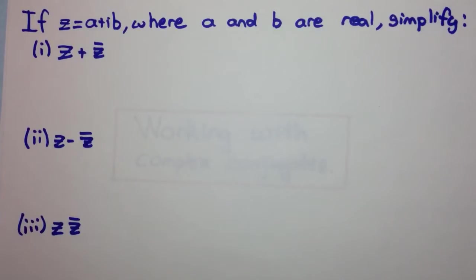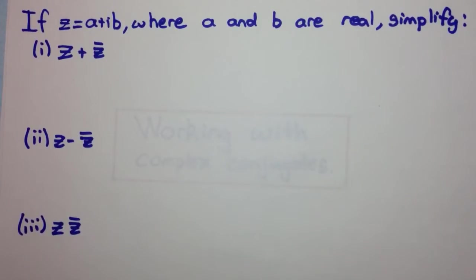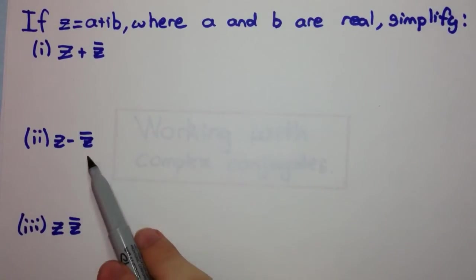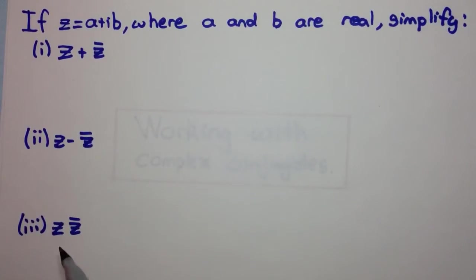This is a theoretical exercise which will be a derivation of some of these properties. If z equals a plus ib, where a and b are real, we need to simplify z plus z bar, z minus z bar, and z times z bar. Remember, z bar is just another way of saying the conjugate of z.